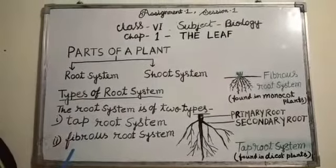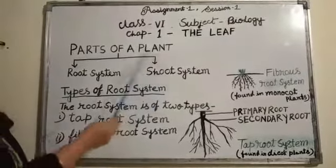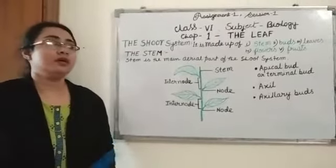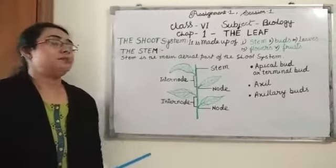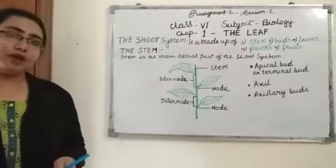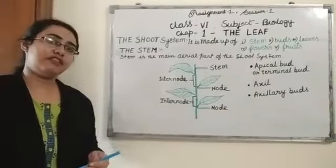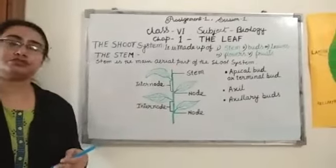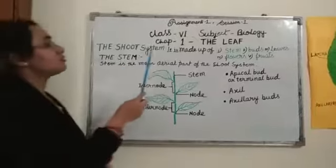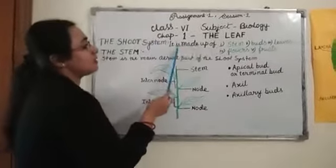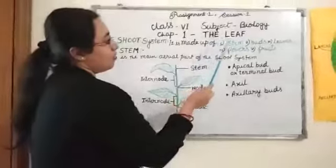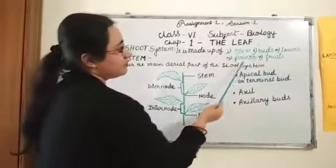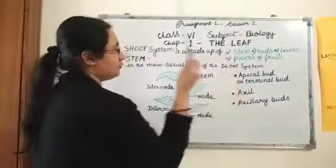Next portion: shoot system. The part of a plant which grows above the soil forms the shoot system. The shoot system is made up of stem, buds, leaves, flowers, and fruits.